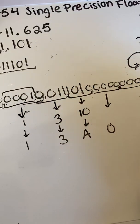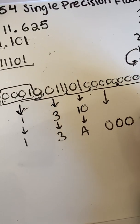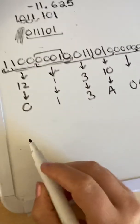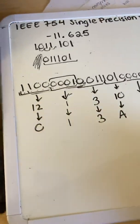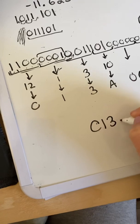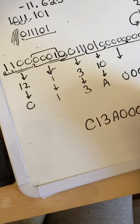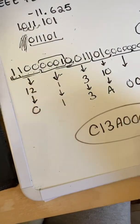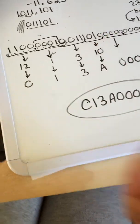And then all these guys are just zeros. So there's one, two, three, four. So then there is our hexadecimal value. So our solution is C1 3A 0000. And that is what I was going for. So I hope this helps.